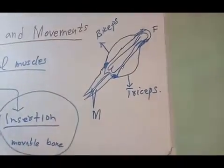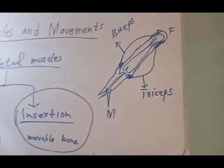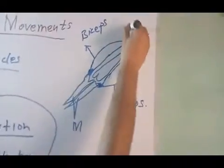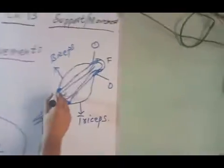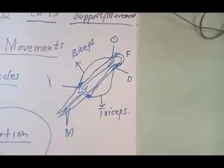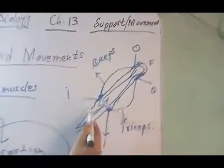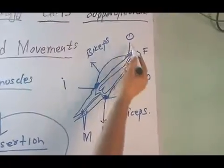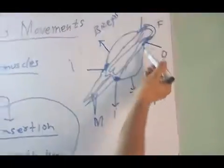Skeletal muscles cause movement when they contract on a command from the central nervous system, which controls movement in the body. In this diagram, this is the origin of the biceps and this is the origin of the triceps. This end of the biceps is its insertion, and this end of the triceps is its insertion. The bones at insertion are movable, while the bone at the origin of any muscle is immovable or fixed.